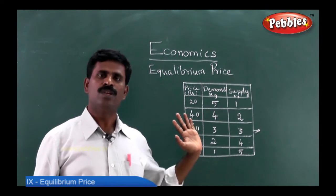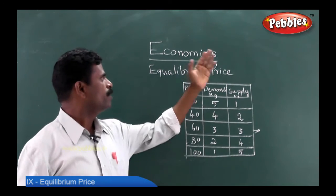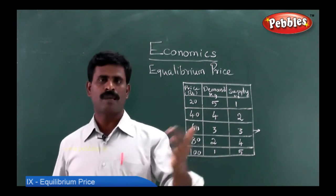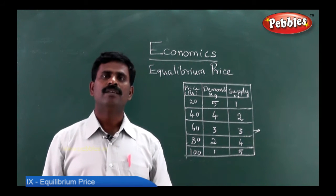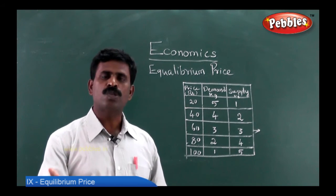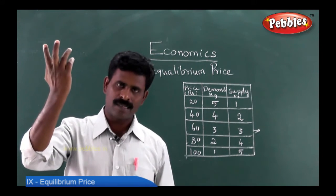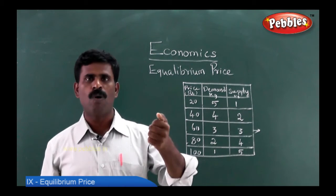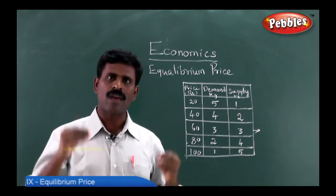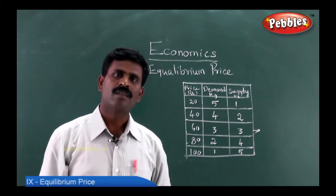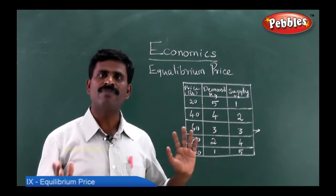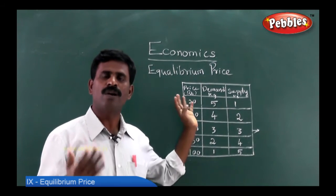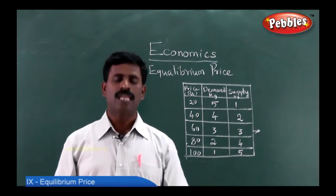We are now with a new topic called the equilibrium price. The law of demand and the law of supply should come together. The consumer wants to buy more when the price is less, and the seller wants to sell more when the price is more — so they both cannot come together. That's why we have the concept of equilibrium price.